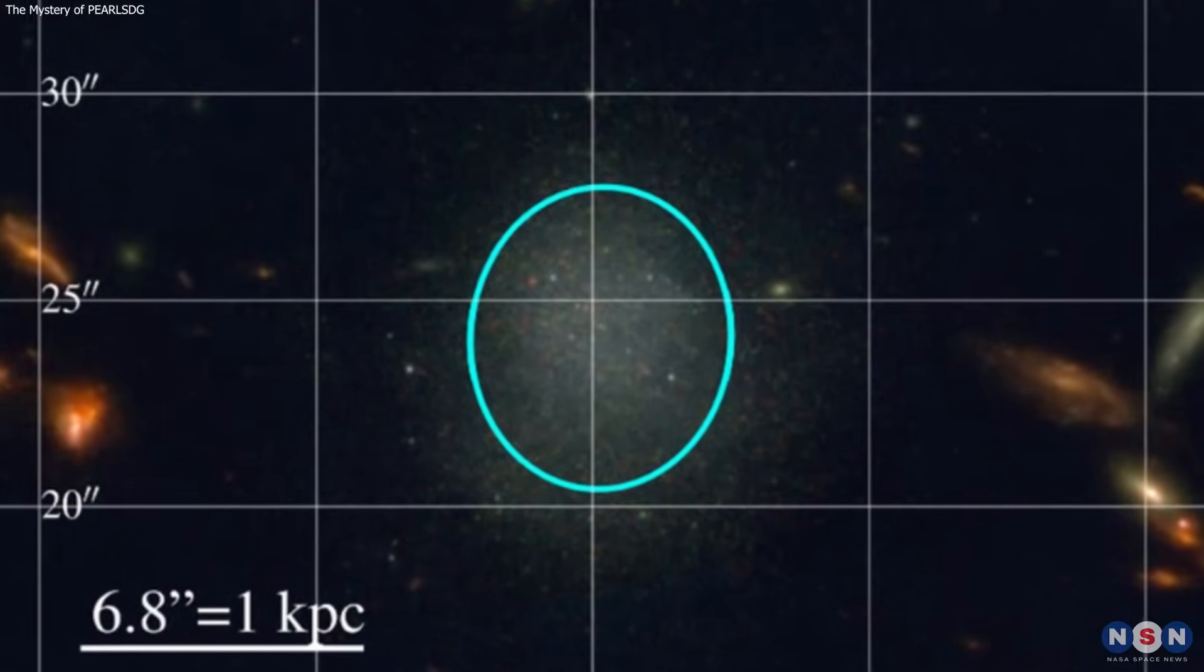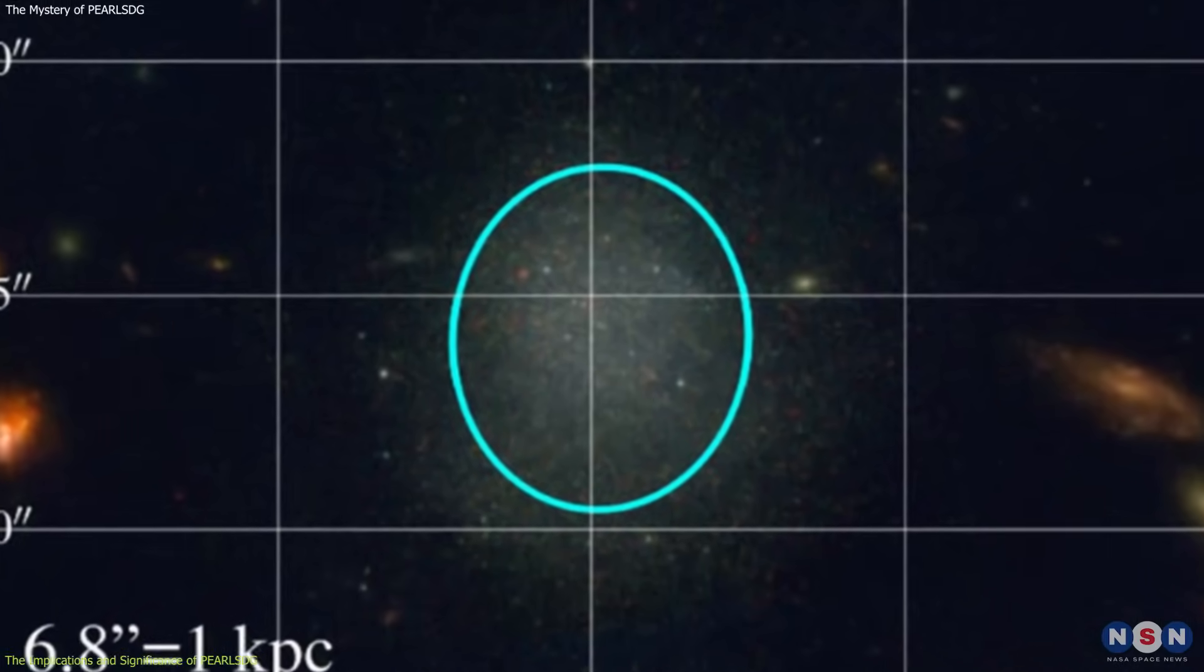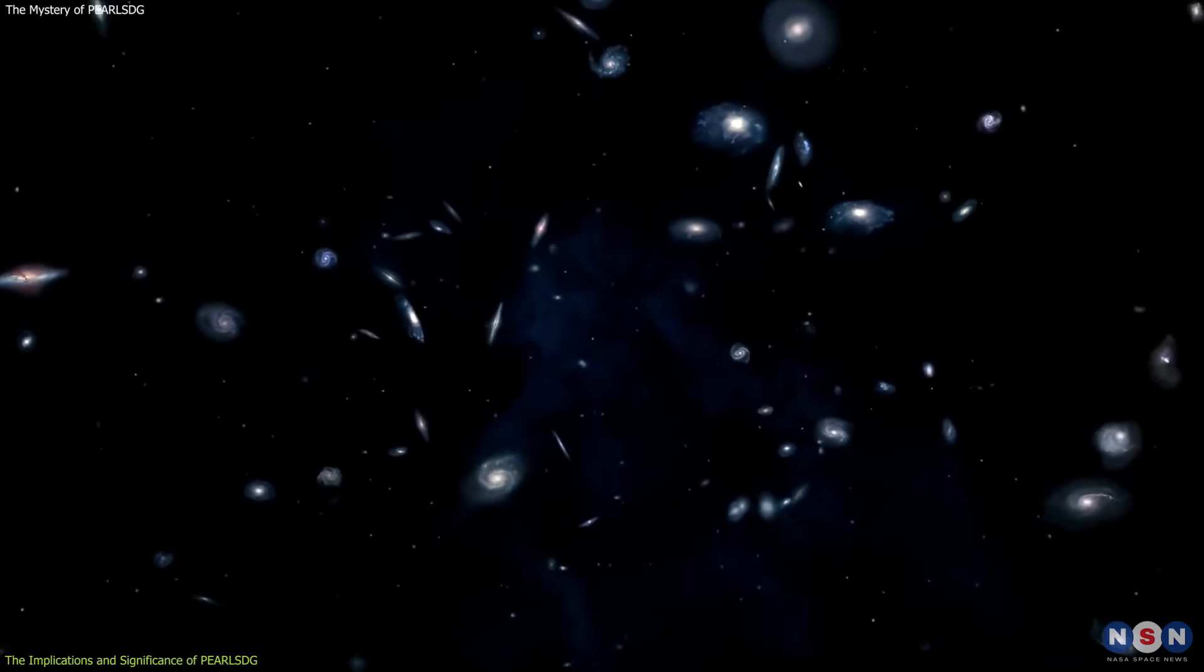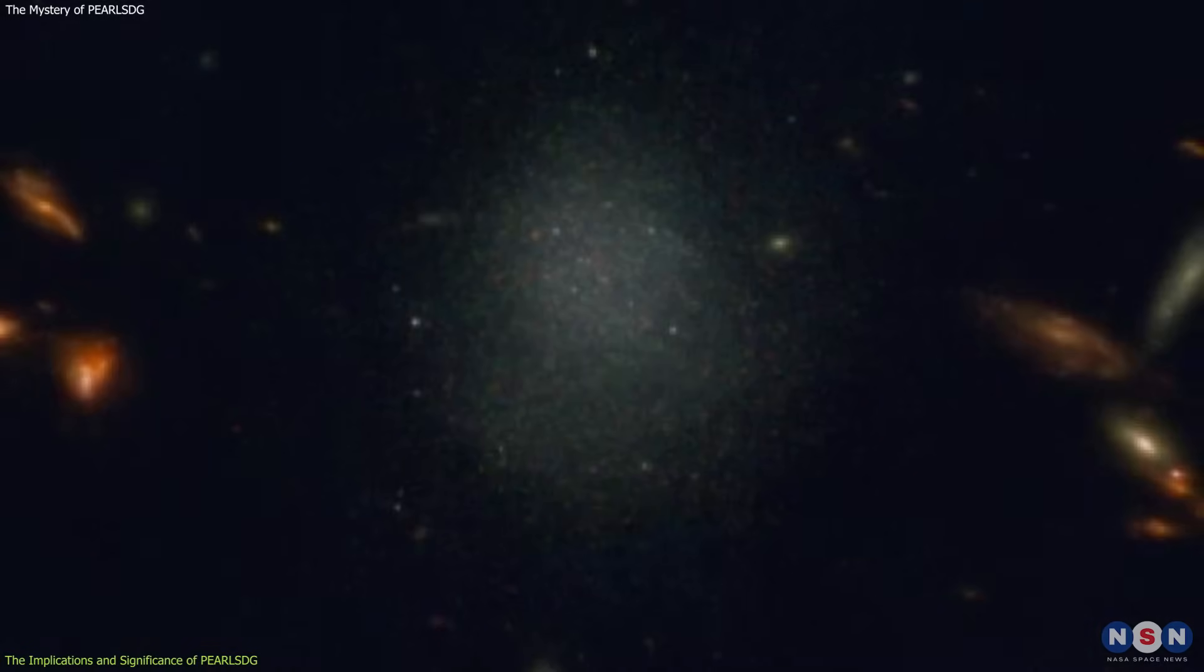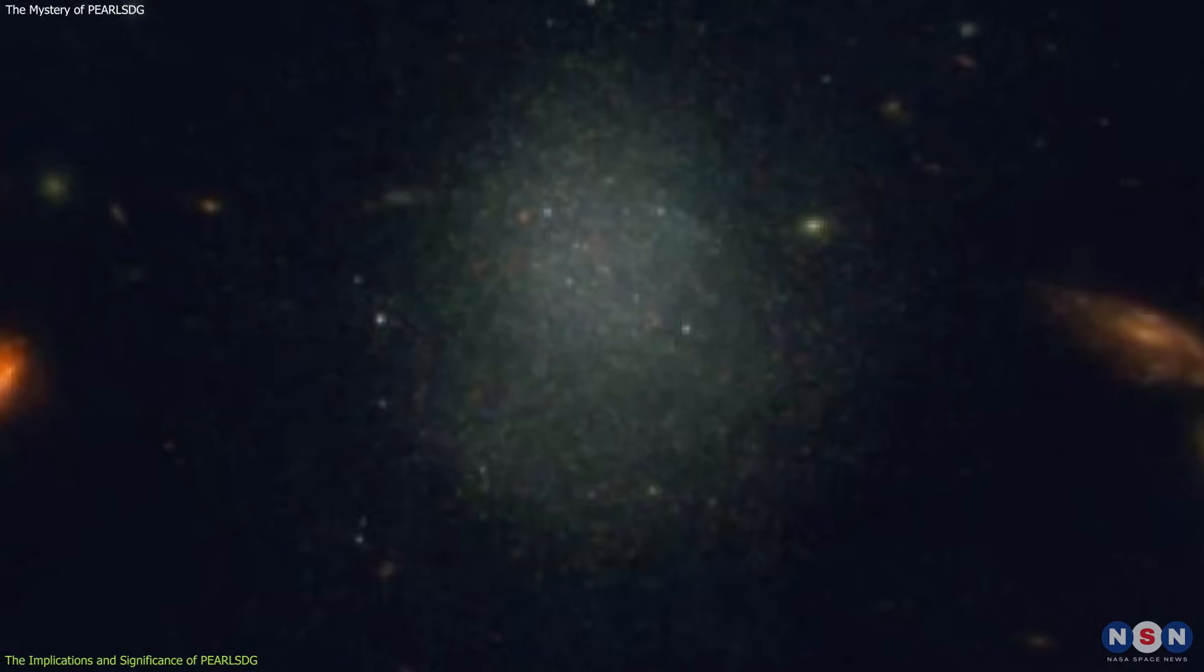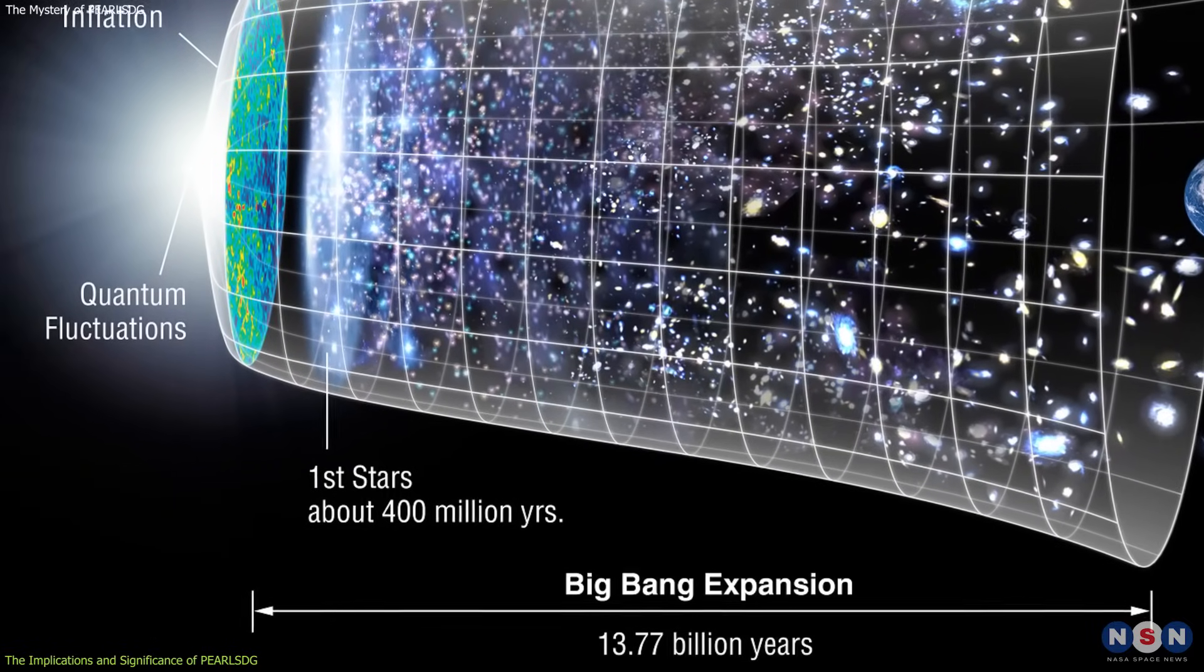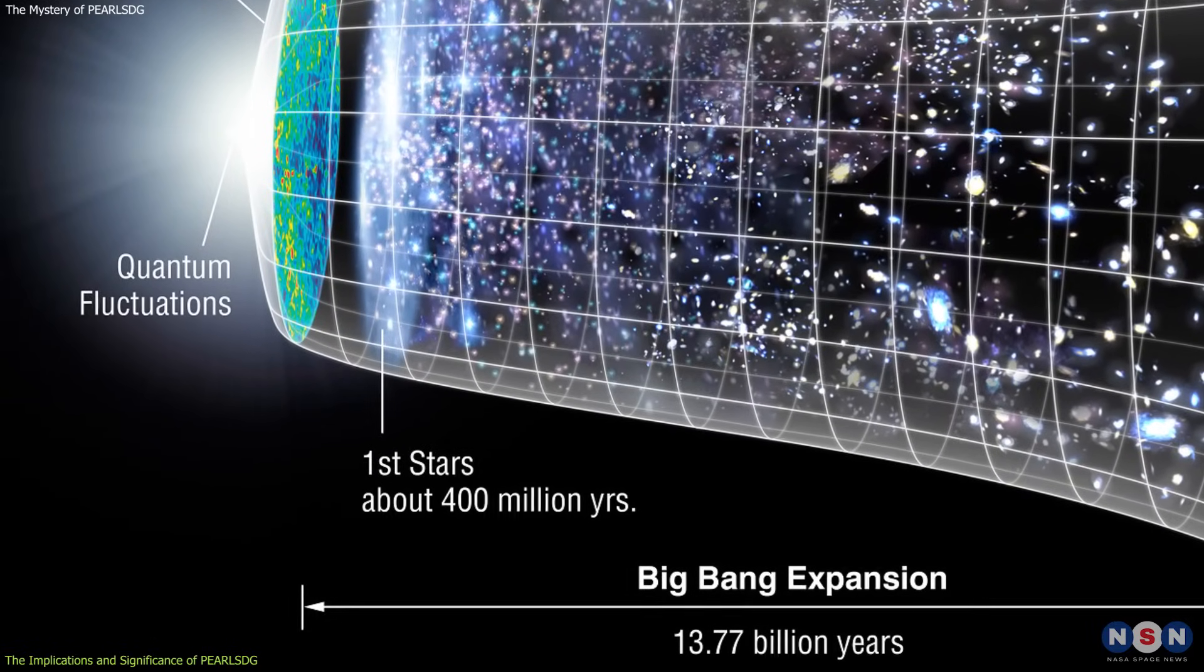PEARLS DG is not just another dwarf galaxy. It is a very rare and peculiar one that has several features that make it stand out from the rest. First of all, it is very old and distant, dating back to about 13 billion years ago, when the universe was only 5% of its current age.